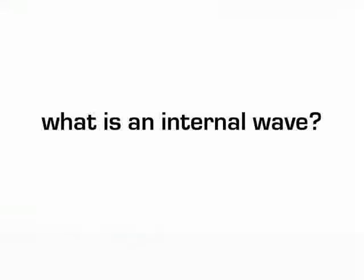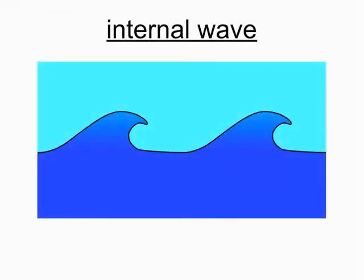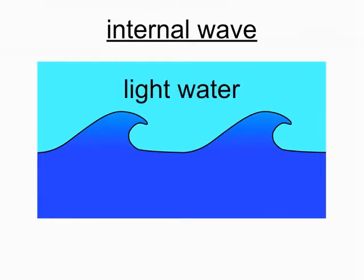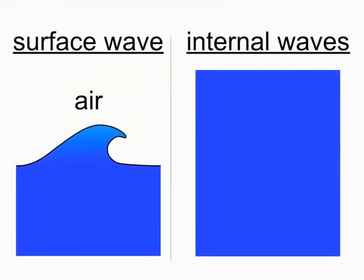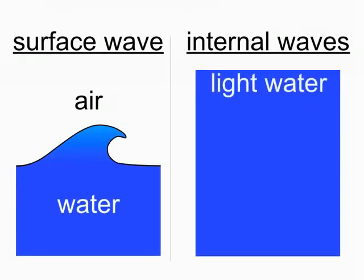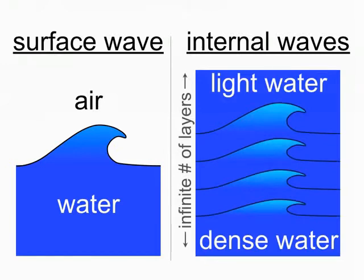So what exactly is an internal wave? Similar to waves on the ocean surface, an internal wave propagates along the interface of two fluids with two different densities. But instead of that interface being between air and water, the interface is within the ocean, which has an infinite number of density layers stacked on top of each other.